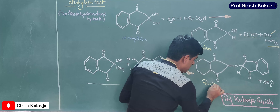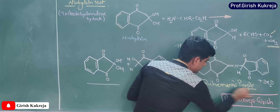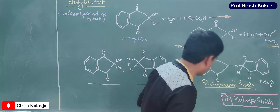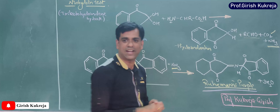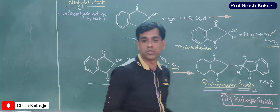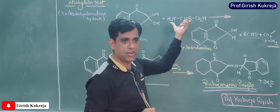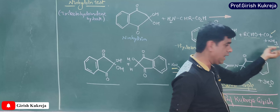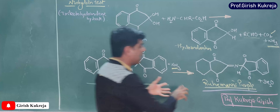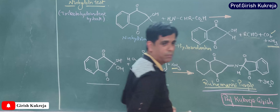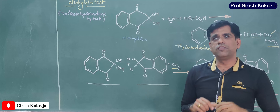The purple colored complex formed is called diketohydrin, also popularly called Ruhemann's purple. So to summarize: ninhydrin oxidizes the amino acid, liberates ammonia; the ammonia combines with ninhydrin and the reduced form of ninhydrin, hydrindantin, to form diketohydrin — Ruhemann's purple. All amino acids give this kind of reaction.